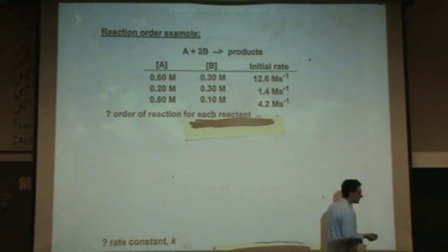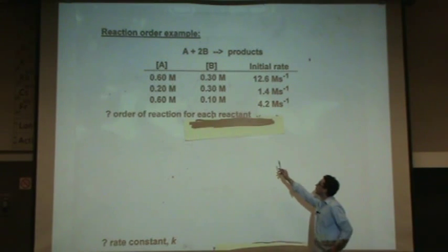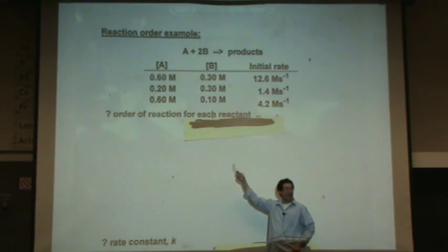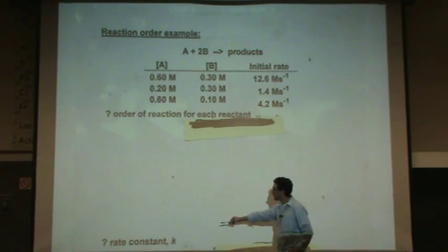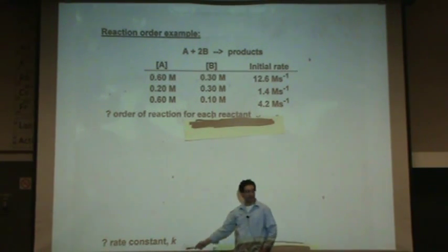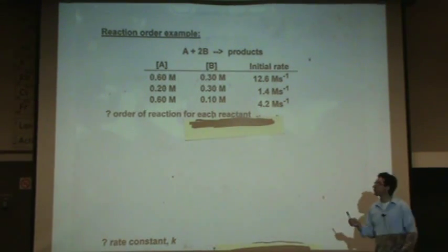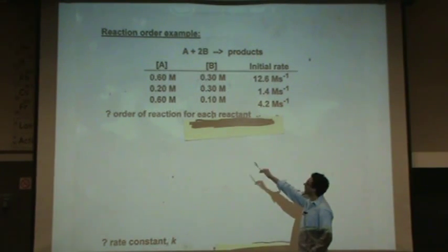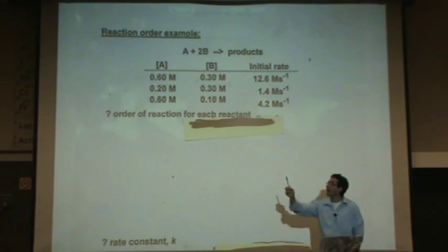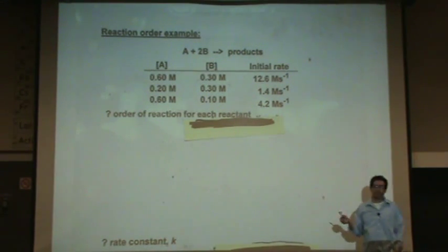Here's an example to find the rate law. First we're going to find the order, that's the M and N of the reaction, the exponents, and then we're going to find the rate constant K. We're going to go through this process and it'll always look like this sort of question where you have the concentrations of A and B, all the reactants, and then you'll have the rates.